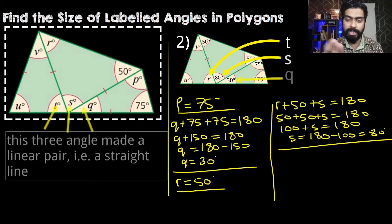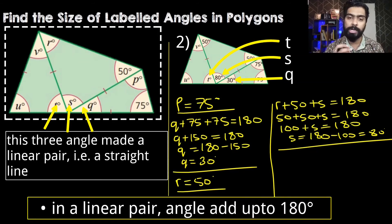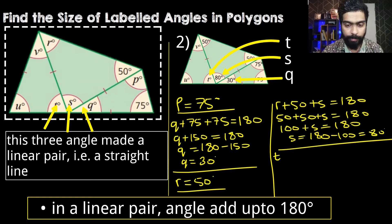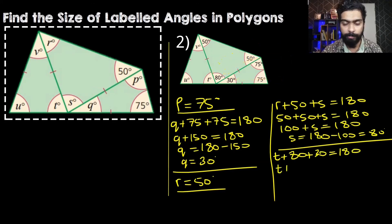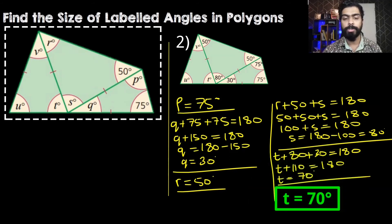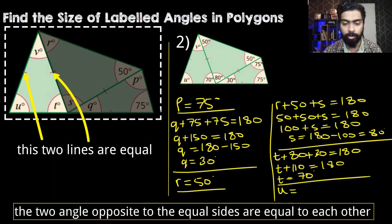T, S, and Q form a linear pair, which means the angles add up to 180 degrees. So T plus angle S which is 80 degrees plus angle Q which is 30 degrees adds up to 180 degrees. So T plus 110 equals 180, therefore T is equal to 70 degrees. Now if you look at this triangle, it is also an isosceles triangle, so U will also be equal to 70 degrees.